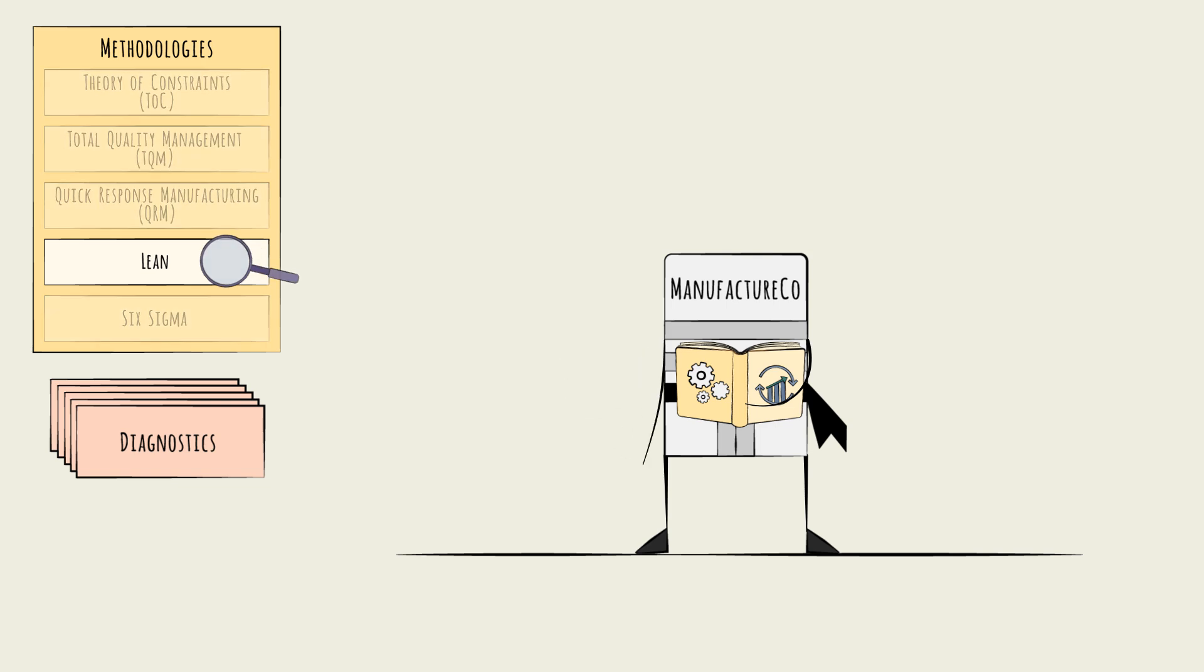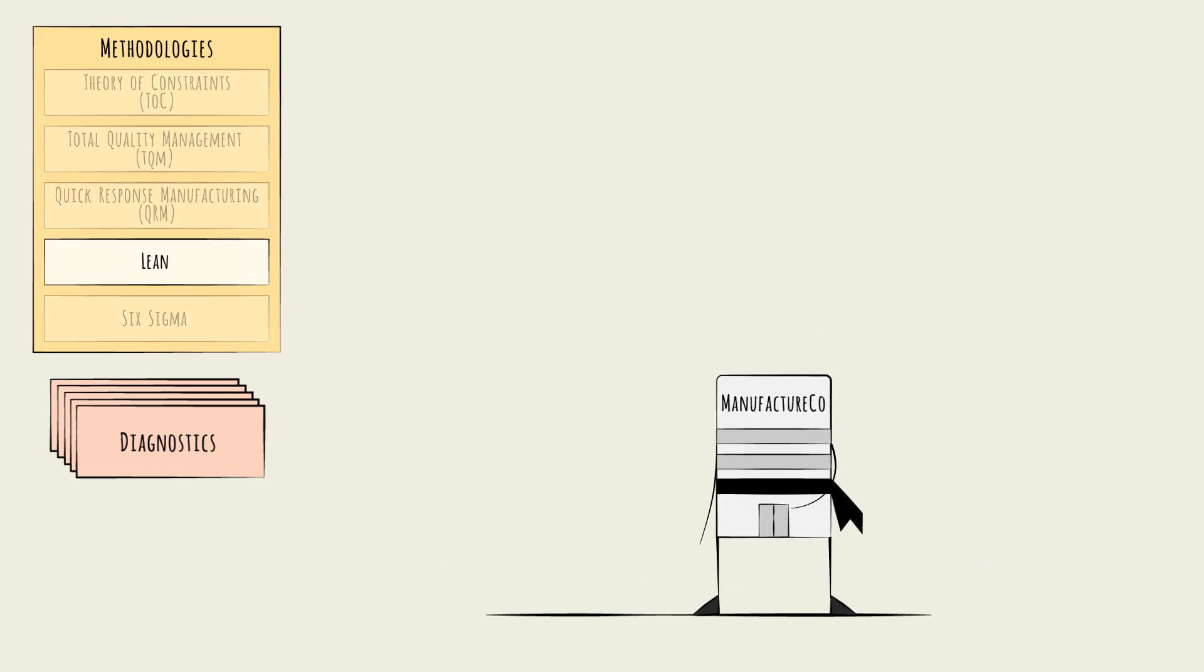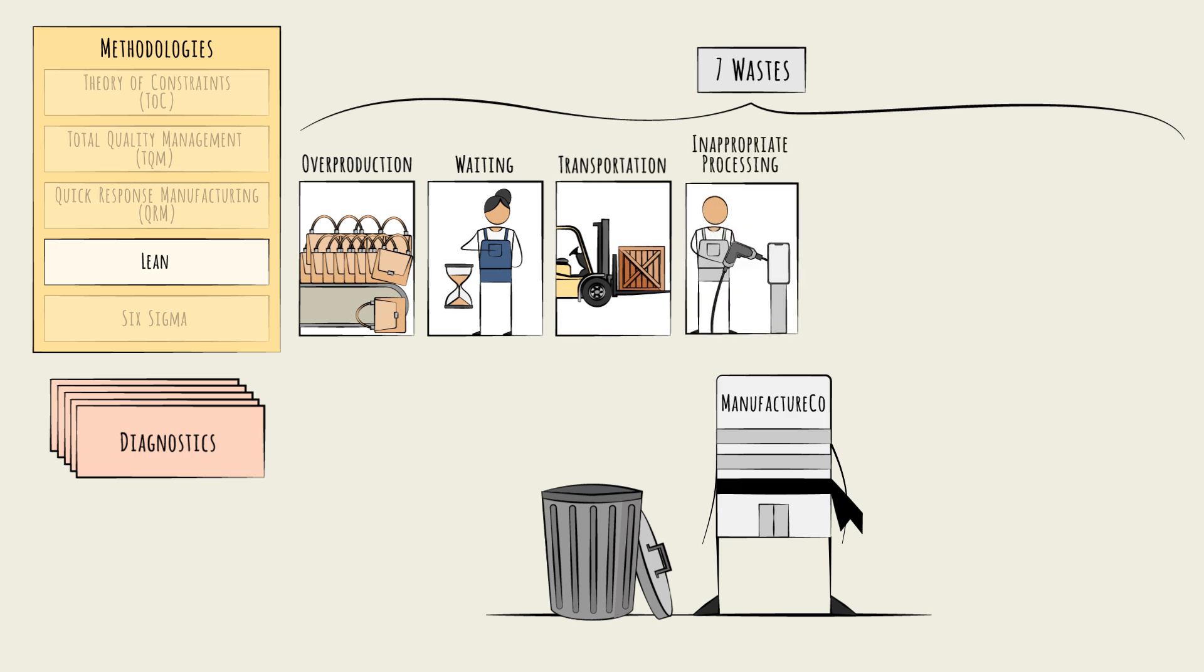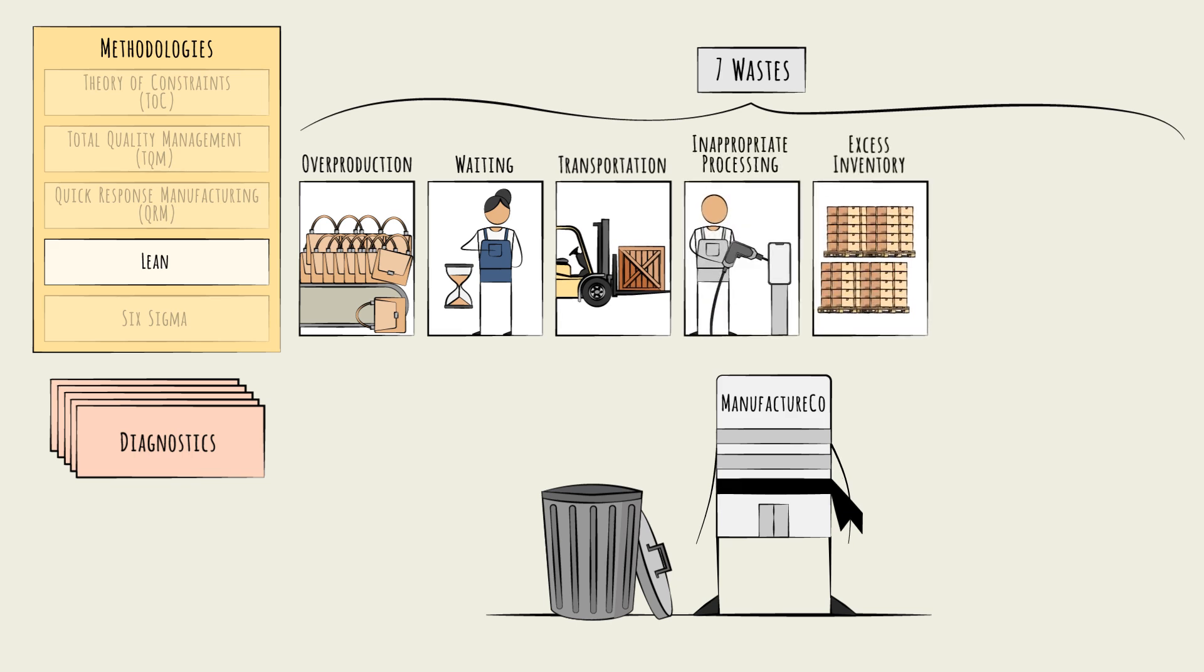Let's consider Lean. Lean emphasizes reducing waste, and the first step in reducing it is spotting it. Lean has a framework for this, the seven wastes: overproduction, waiting, transportation, inappropriate processing, excess inventory, unnecessary motion, and defects.